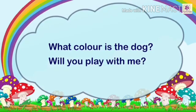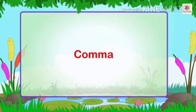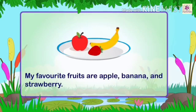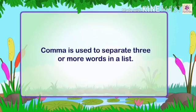Next, let us study about the comma. For example: 'My favorite fruits are apple and banana' — here we have not used a comma because two words are joined by 'and.' But 'My favorite fruits are apple, banana, and strawberry' — here we have three items, so after apple we use a comma. Comma is used to separate three or more words in a list.